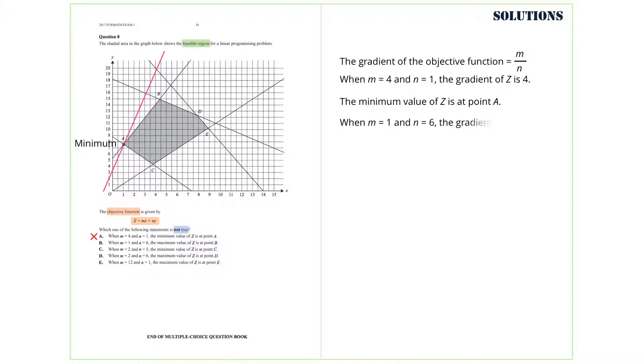Let's check option B. When M equals 1 and N equals 6, the gradient of Z is 1 over 6. This line has a gradient of 1 over 6. We move it down and we notice that the maximum value of Z is at point B. So, this option is true as well, so we can cross it out.